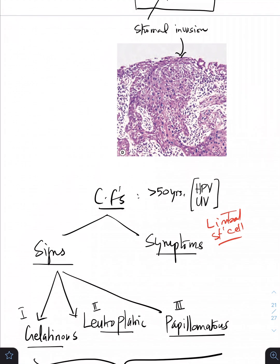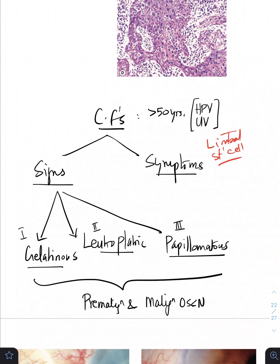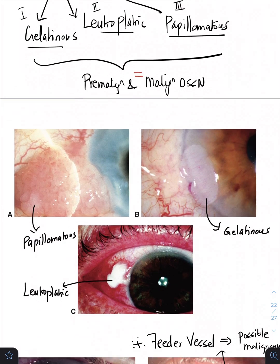Important thing to note is that these three forms are seen in both pre-malignant and malignant OSSN, and you won't see much of a difference between them, which means clinically speaking both the pre-malignant and the malignant lesions can appear the same. That is important thing to consider.